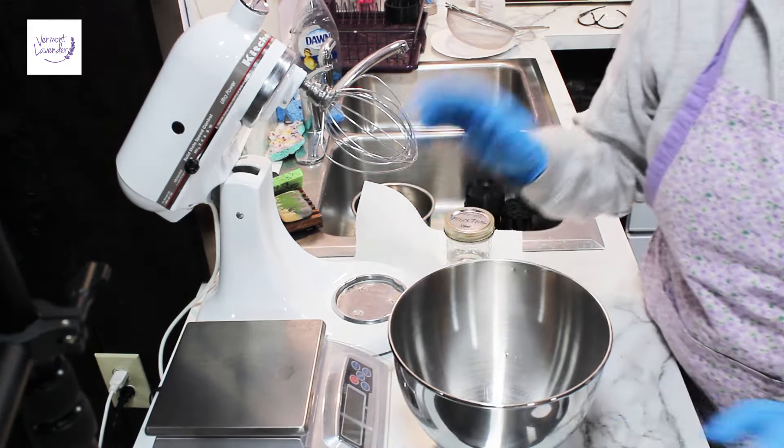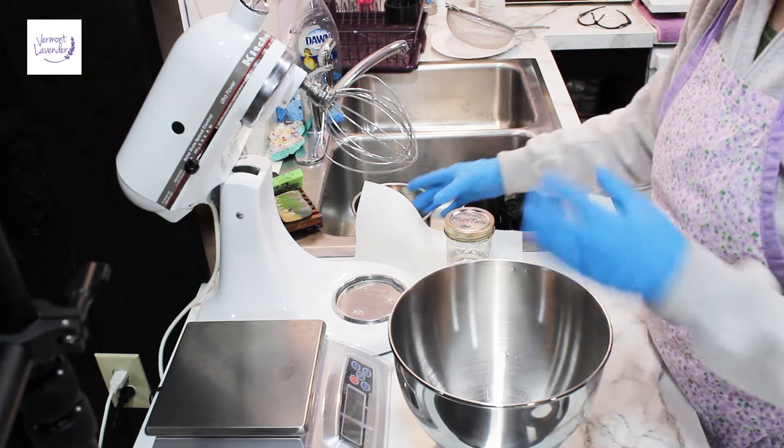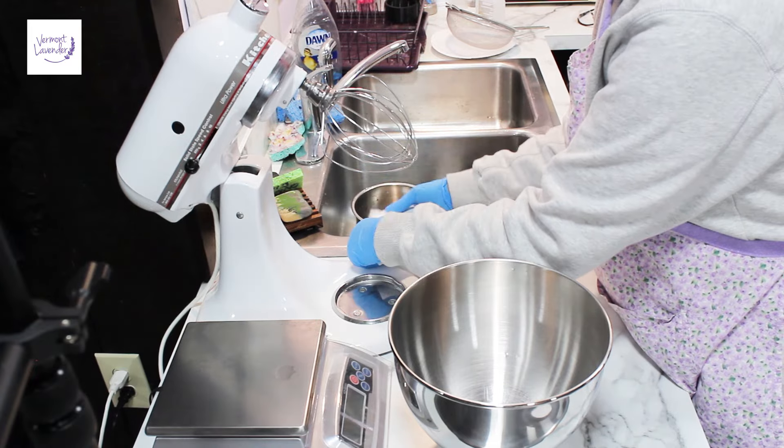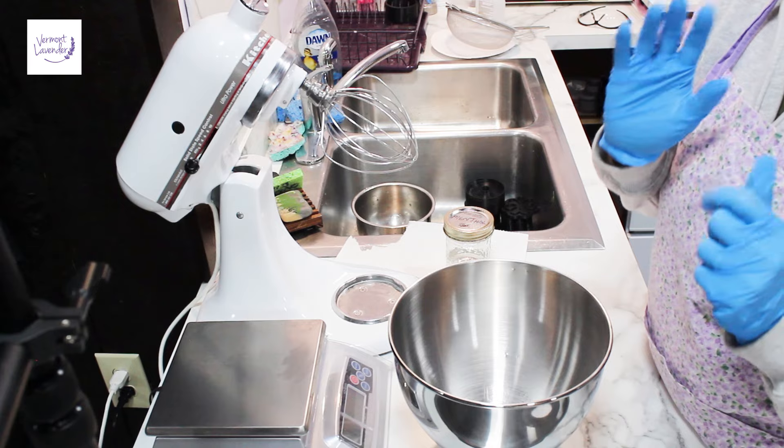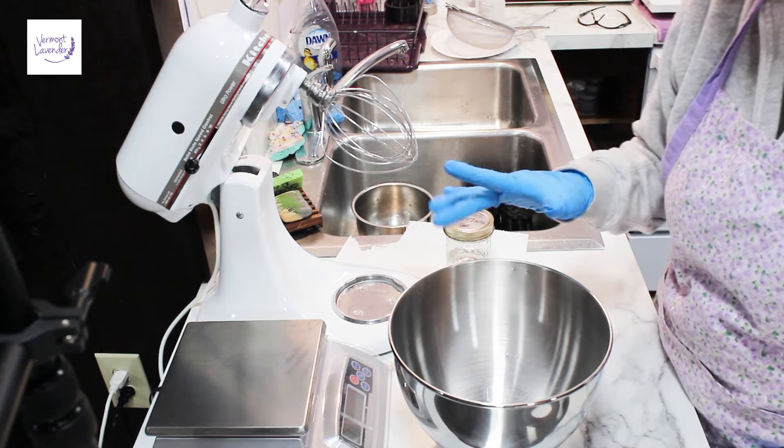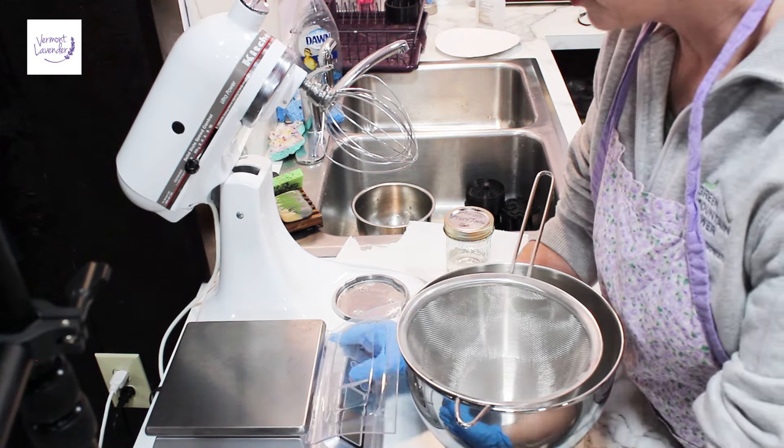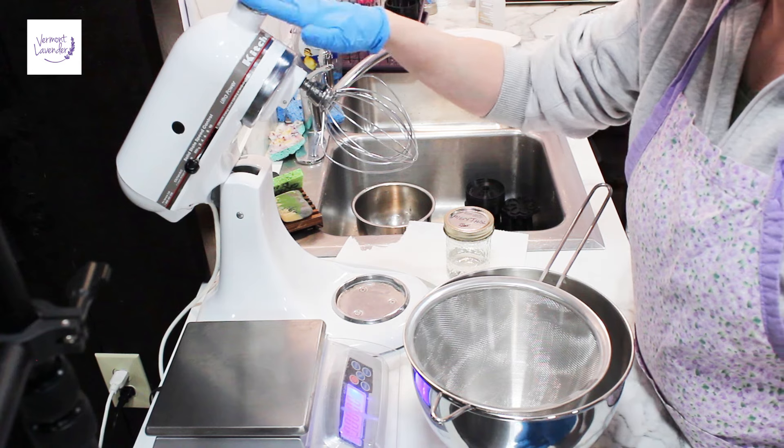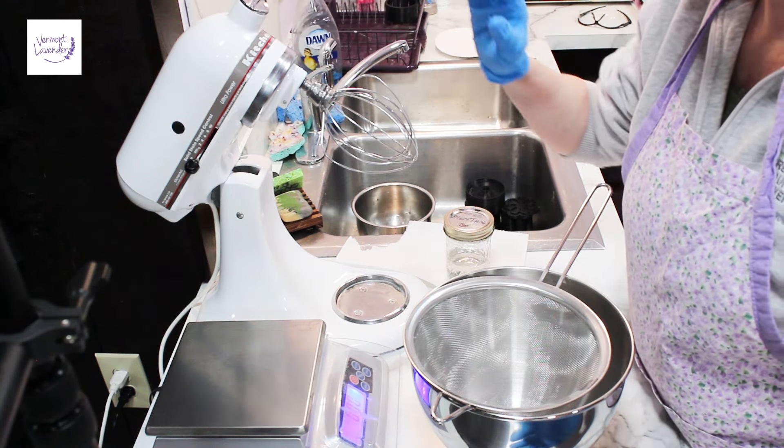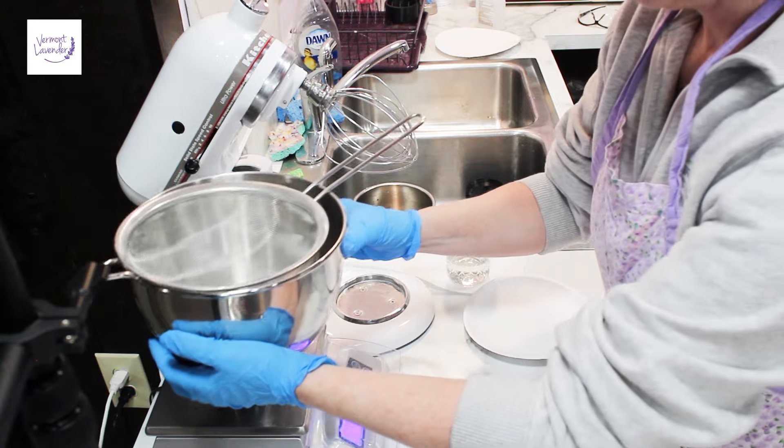I'm going to measure out my baking soda first. I'm making a single batch. My other video on how to make super strong shower steamers was a little confusing for people, so I'm making a single batch with this one. You always want to strain it. I'm using a stand mixer too. You don't need to, but it does make it easier.